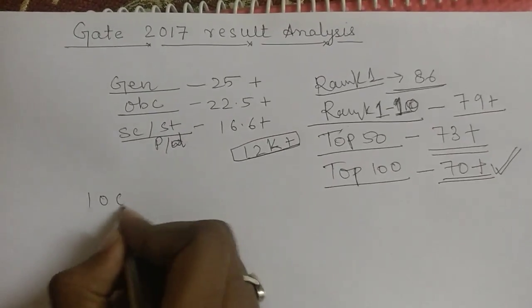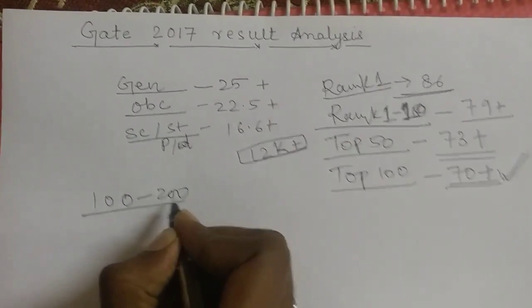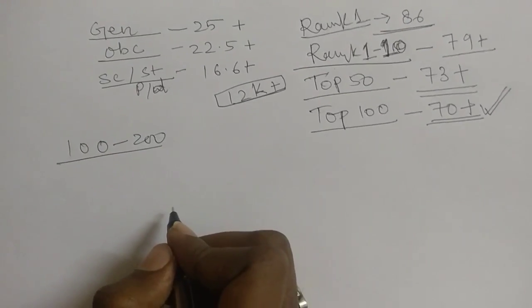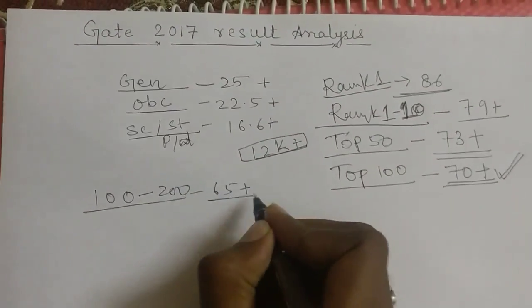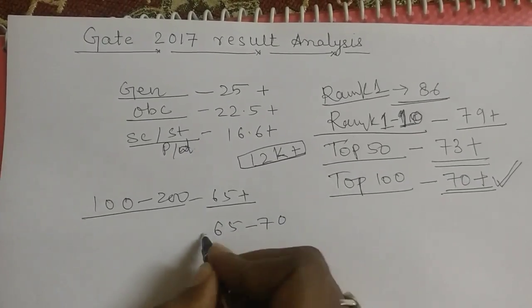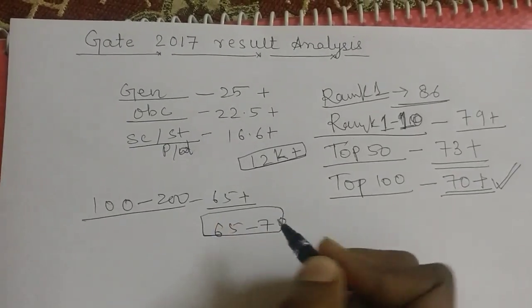This year 100 to 200, to get rank in this slot, this year the cutoff was 65 plus. So, a student who has got 65 to 70 marks, he is in top 100 to 200.